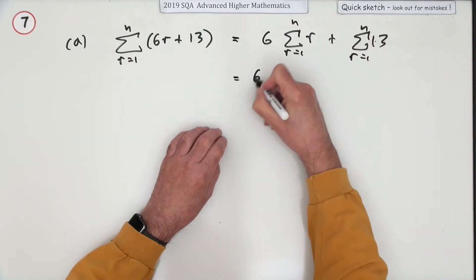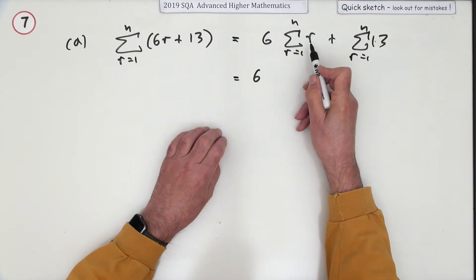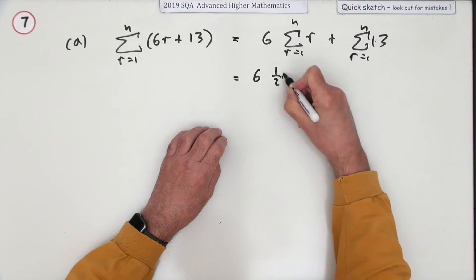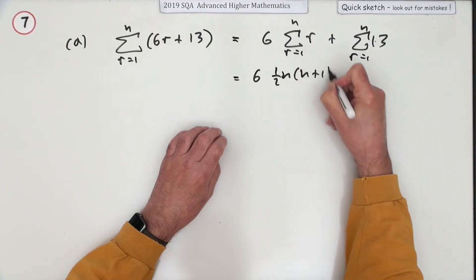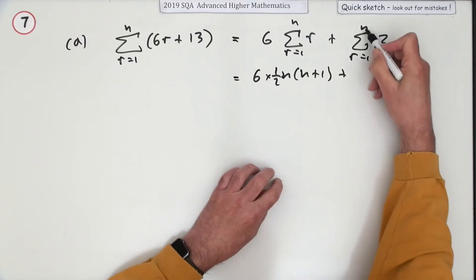Well that'll be six times whatever this comes to, and adding up the natural numbers comes to a half of n times n plus one. You can just check that at the front, and adding up n lots of 13 simply gives you 13n.